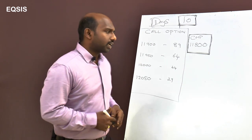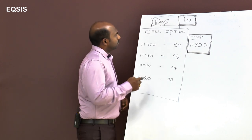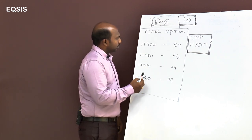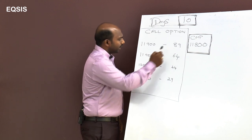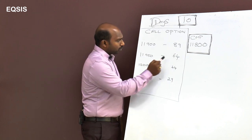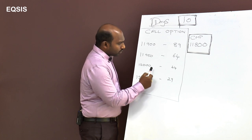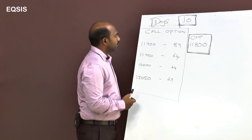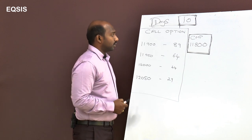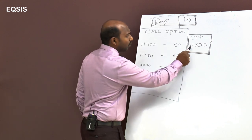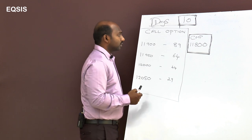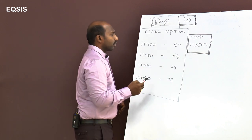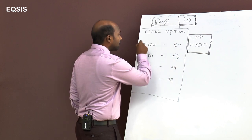Let's look at a few call options. The 11900 call option is trading at 89, the 11950 call option at 64, the 12000 call option at 44, and the 12050 call option at 29. The current market price of the underlying is around 11800.